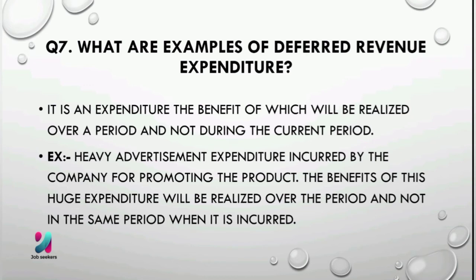The next question is: what are examples of deferred revenue expenditure? It is an expenditure whose benefit will be realized over a period and not during the current period. For example, heavy advertisement expenditure incurred by a company for promoting a product — the benefits of this huge expenditure will be realized over the period and not in the same period when it is incurred.